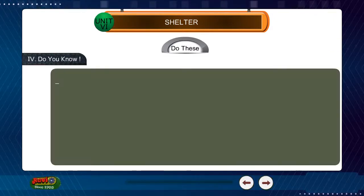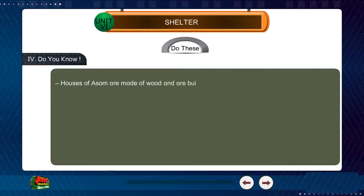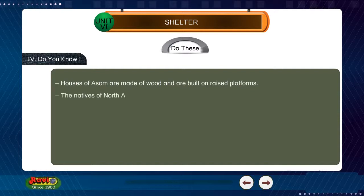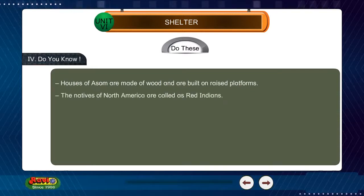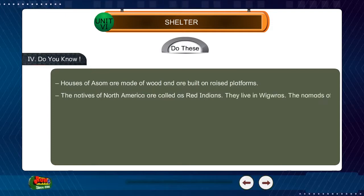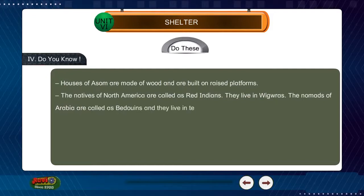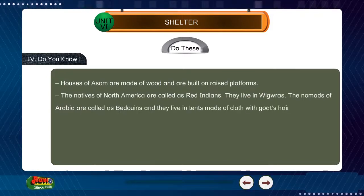Do you know? Houses of Assam are made of wood and are built on raised platforms. The natives of North America are called Red Indians. The nomads of Arabia are called Bedouins. They live in tents made of cloth with goat's hair.